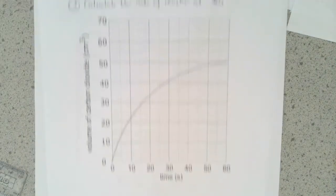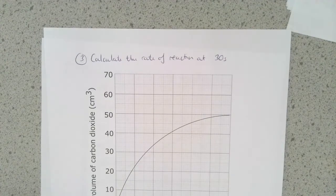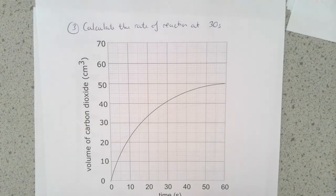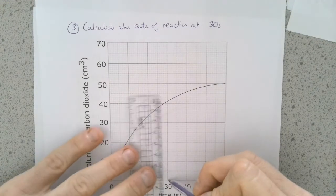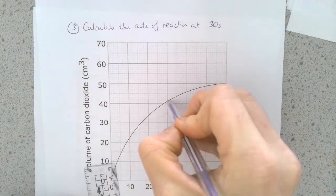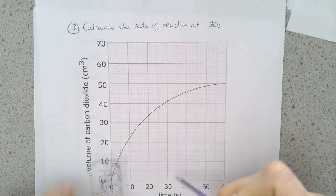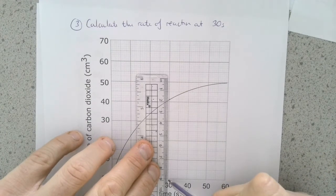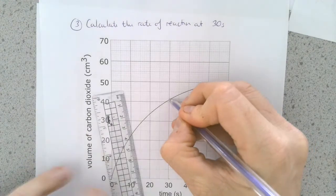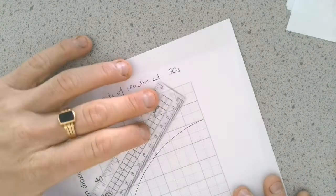The final thing that we want to do is to be able to calculate the rate of reaction at a particular point, in this case, at 30 seconds. This is a little bit more involved. So the first thing I want to do is get my ruler and just mark a point on the line there at 30 seconds. So I've used my ruler. I've marked 30 seconds. Let me go from here up to the line there. I'm then going to need to draw a tangent.